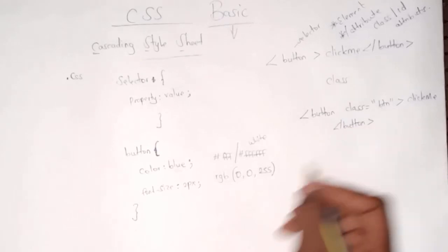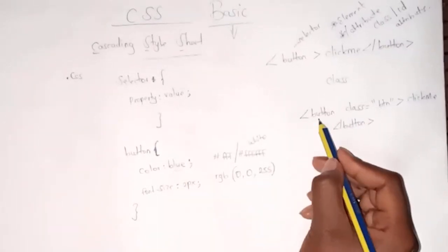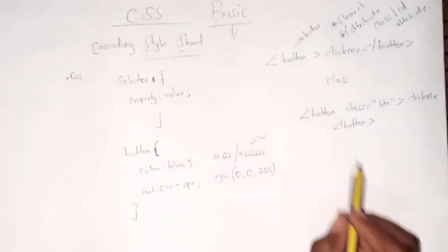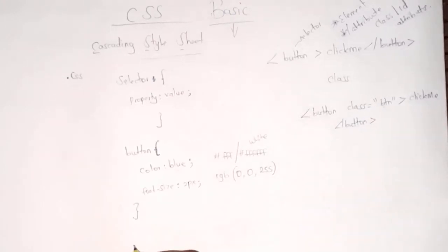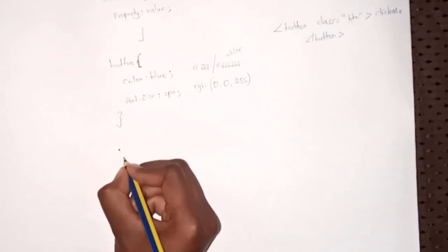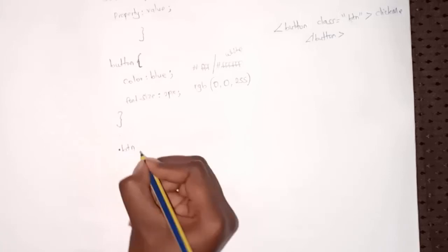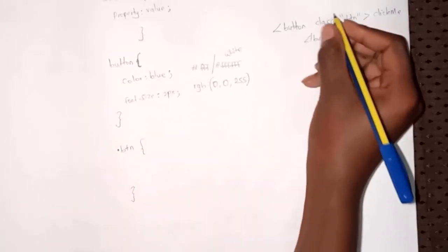Now this button of class BTN, when we're referencing it, we're not using button but the class, because maybe we have three buttons but we want only those with the class BTN to be styled. Then we can say dot—dot represents a class. So we're saying this is a class which has a name of BTN and we want to style it.